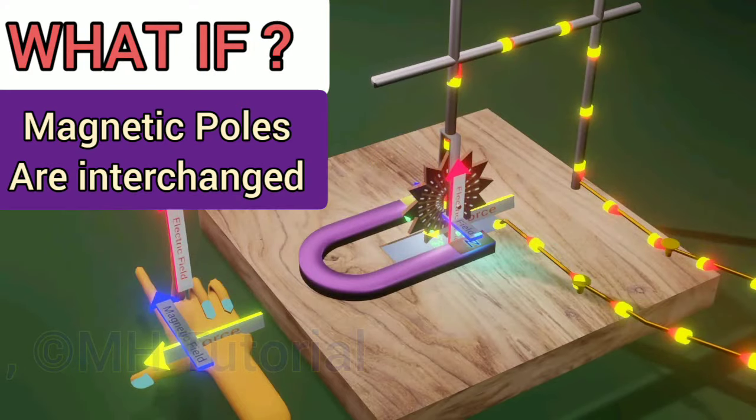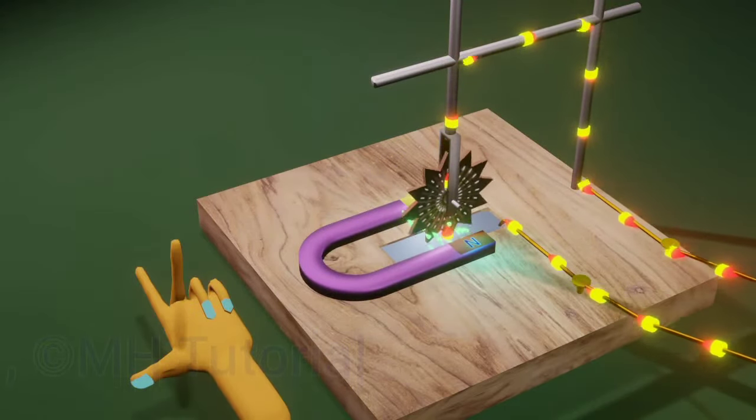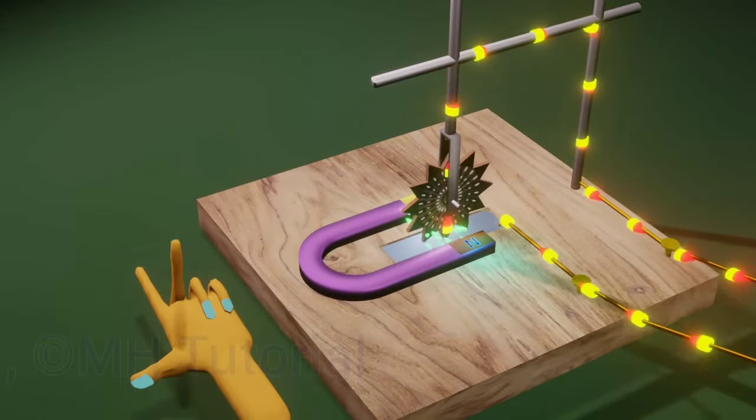If we interchange the positions of the magnetic poles, what will you see then? Let's see. Magnetic field can be reversed by simply lifting and rotating the magnet.